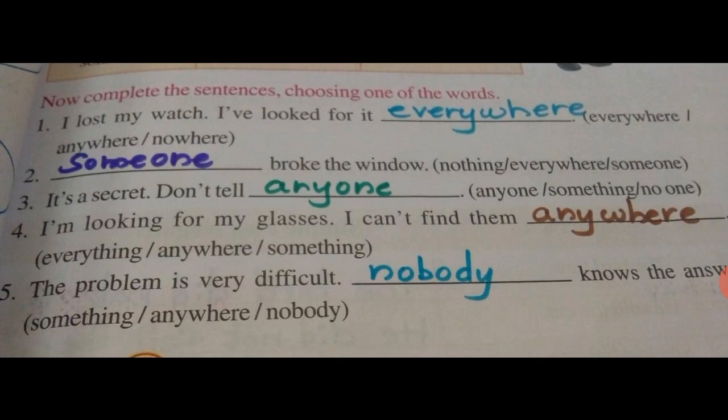Third: 'It's a secret. Don't tell dash.' Since a secret must be kept confidential and not told to everyone, the answer is 'anyone' — don't tell anyone. Fourth: 'I am looking for my glasses. I cannot find them dash.' Answer: 'I cannot find them anywhere.' Fifth: 'The problem is very difficult. Dash knows the answer.' Since the problem is difficult and nobody knows the answer, the answer is 'nobody.' If you know the concept, you can answer any question easily. Learn this table.